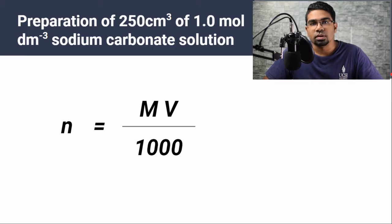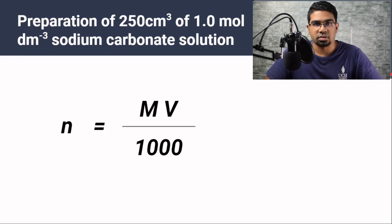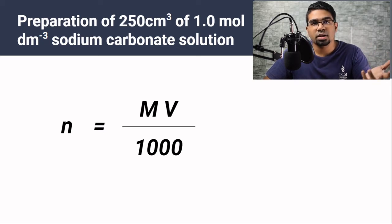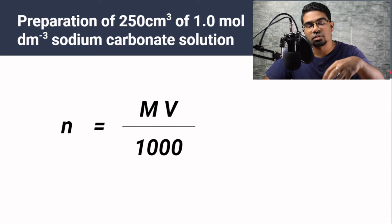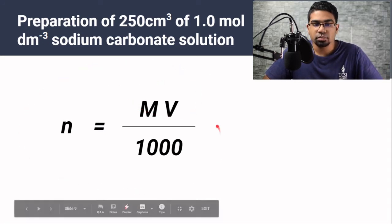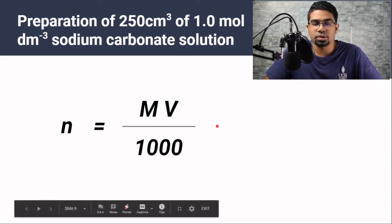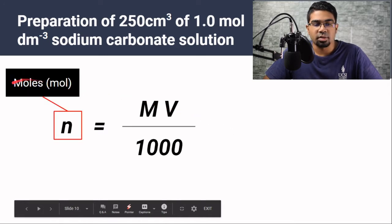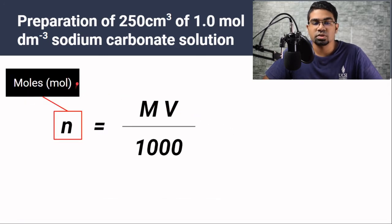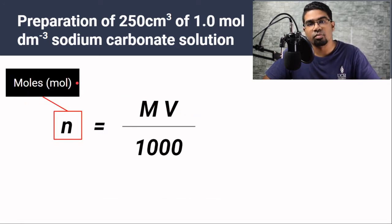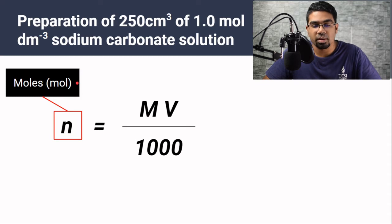Before we can go on with the method, we need to do some calculations first. We need to find out exactly how much solute we need to dissolve in the solvent. Here we have the formula: N = MV / 1000. N is the number of moles — in this case, the number of moles of sodium carbonate.